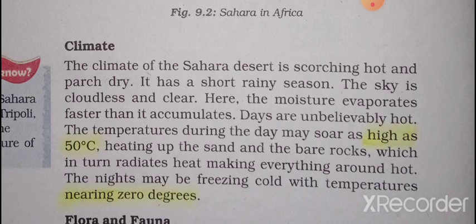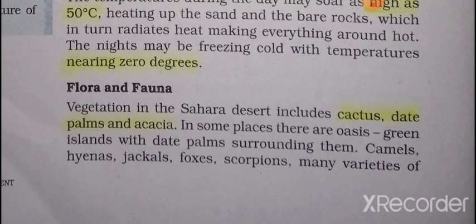Now, flora and fauna. Flora means vegetation — the trees and plants. Flora in the Sahara desert includes cactus, date palms, and acacia. As you know, in the hot desert these types of plants are found.